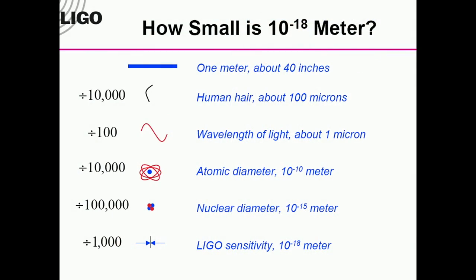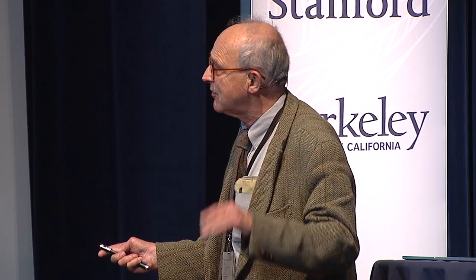A meter is about three feet. To get from one meter down to 10 to the minus 18: a human hair requires dividing by 10,000. Infrared light divides by another hundred — you're down to one micron. Visible green light is about half that. Divide by another 10,000 and you get to the size of an atom — something you can still measure with a medicine dropper and a big tub of water. But then we're stuck.